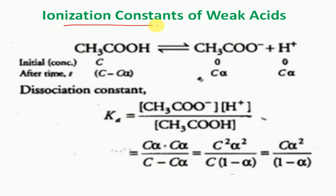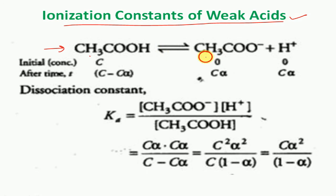Next topic: ionization constant of weak acids. A weak acid example is acetic acid. CH3COOH is in equilibrium because it is a weak acid — it dissociates partially, giving CH3COO⁻ and H+. At initial time T = 0, no product is formed, so the concentration of reactant is taken as C and the product concentrations are zero.